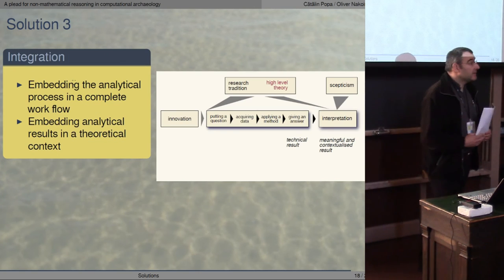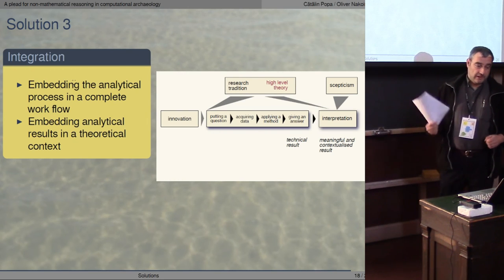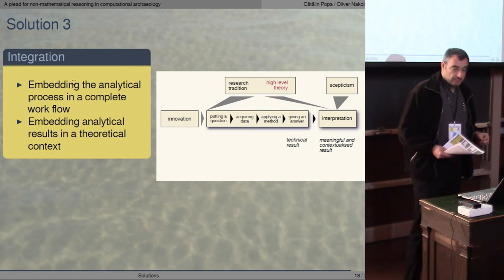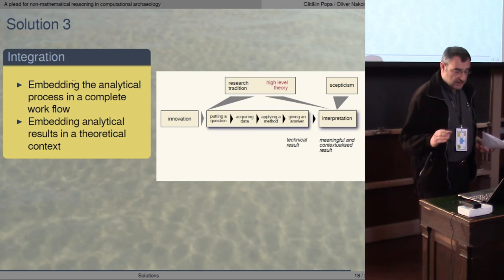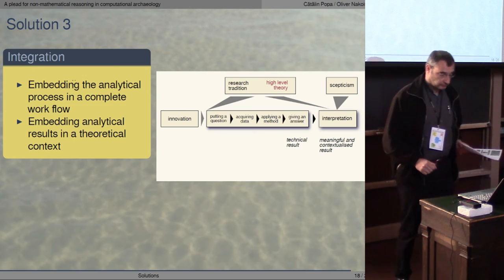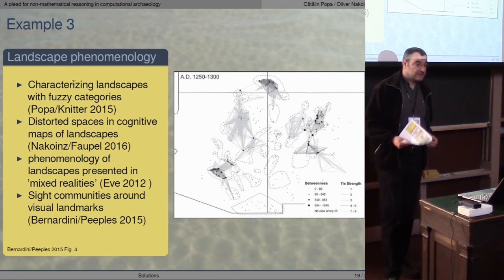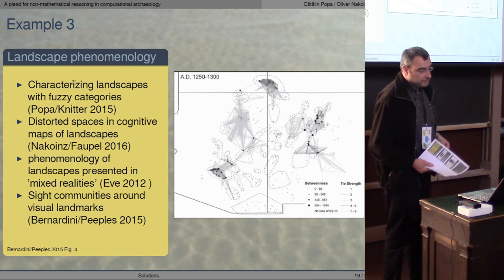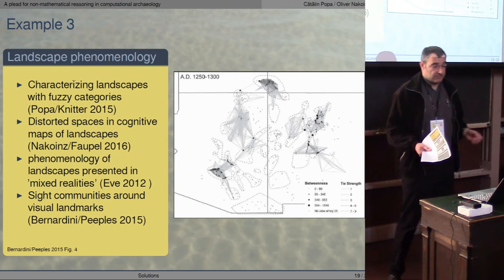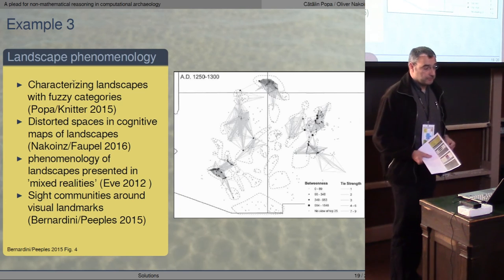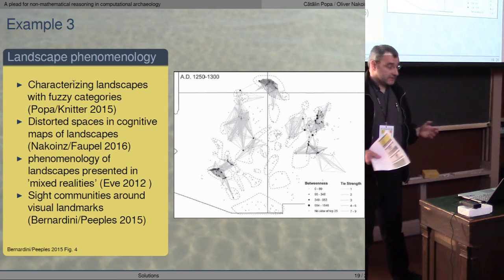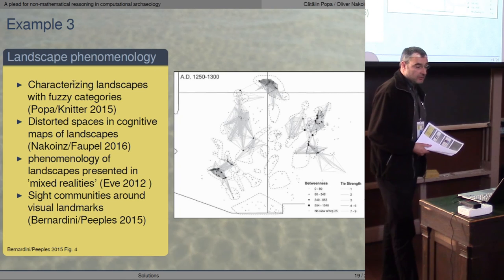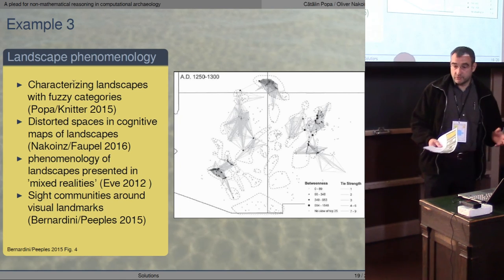The third solution brings us back to structured data: in our research process we have to include theory at the beginning to formulate our question. There are many examples from landscape phenomenology which try to do this. From our own work, examples include the characterization of landscapes with textural categories, the production of cognitive maps of landscapes, the phenomenology of landscapes presented in mixed realities, and site communities around visual landmarks. So there are many approaches which allow us to involve theory.